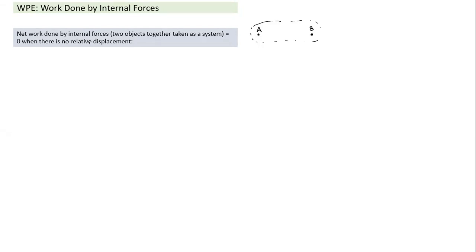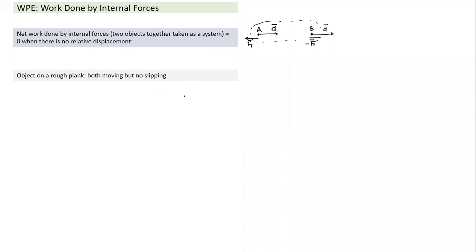If there is no relative displacement — meaning during a time interval, both A and B have the same displacement in the same direction and same magnitude — then the net work done by internal forces is zero. This is because forces are opposite but displacements are identical, so the work cancels out.